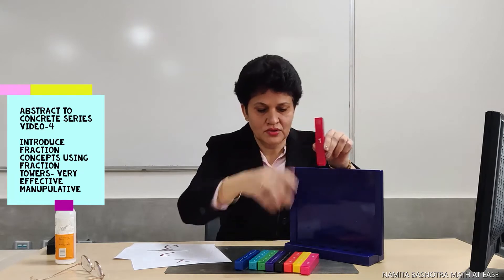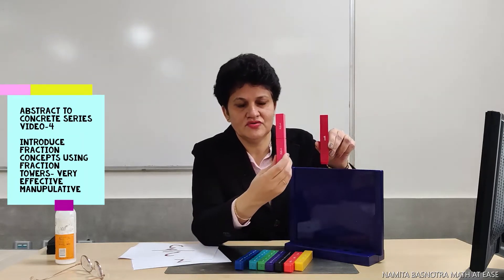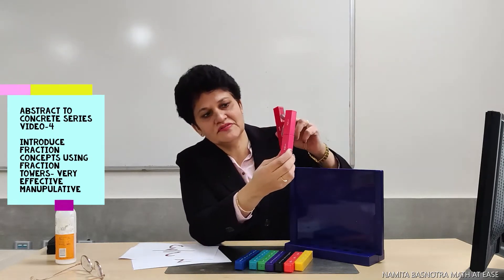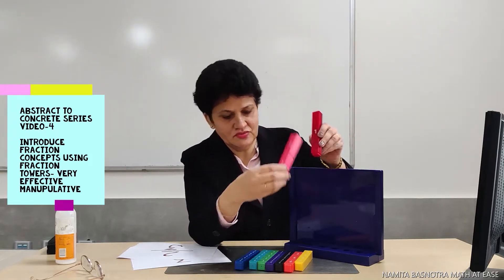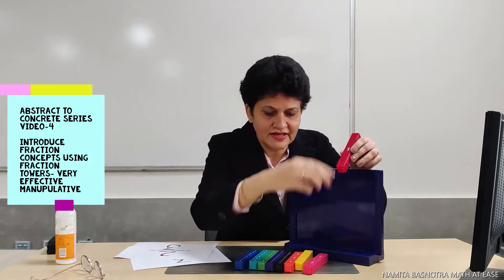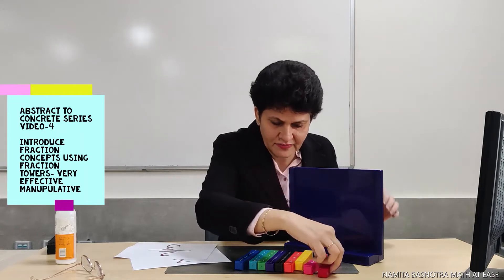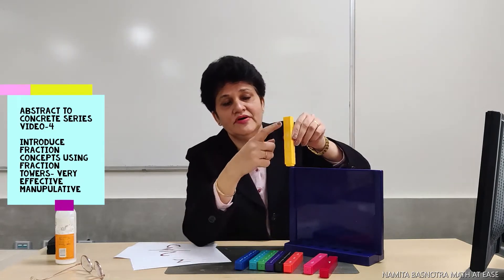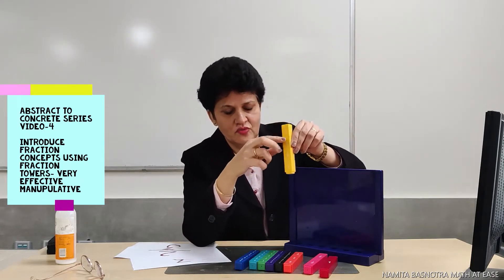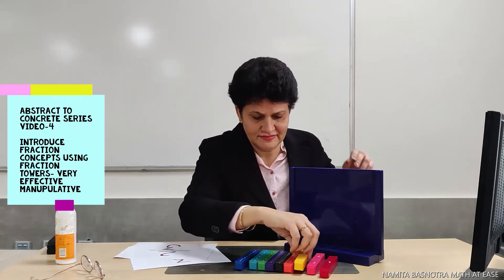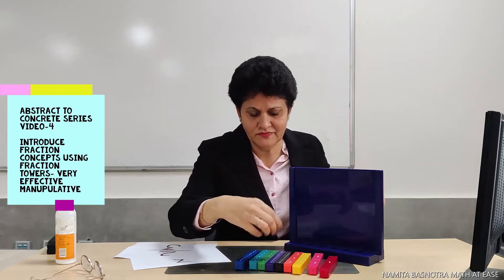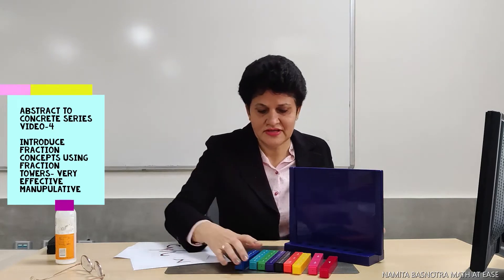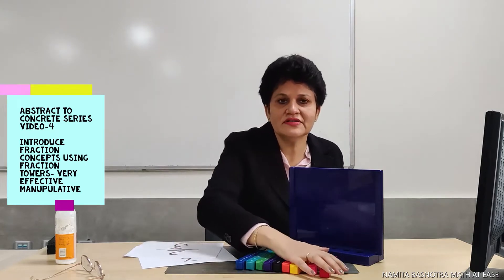This is my one whole, and this is one by two — we have two pieces of one by two. Similarly, I have four pieces of one by four, and then we have one by threes as well.